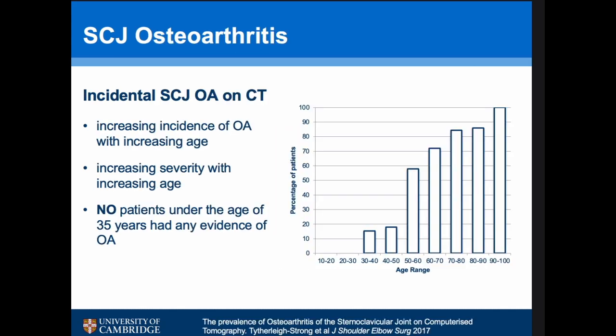SCJ osteoarthritis is in fact very common — previously it wasn't really known about. We did a study where we looked at CT scans and found an increasing incidence of OA with increasing age. By about age 50, over 60% of people have SCJ osteoarthritis. Interestingly, under the age of 35 we found no patients had osteoarthritis. Slightly more mature athletes — recreational tennis and racket sports players in their 40s and 50s — do start to present with SCJ osteoarthritis.